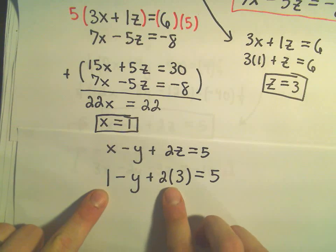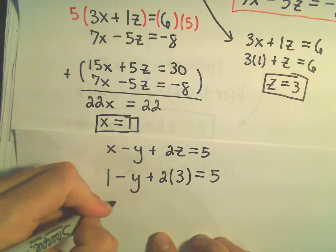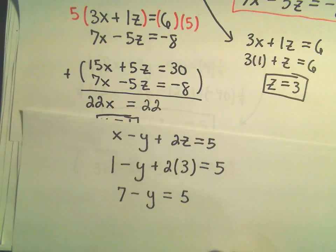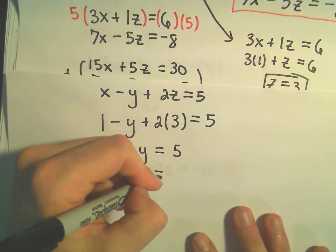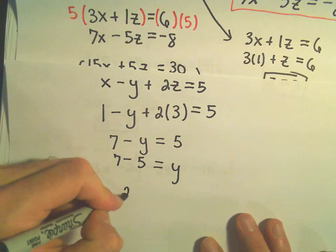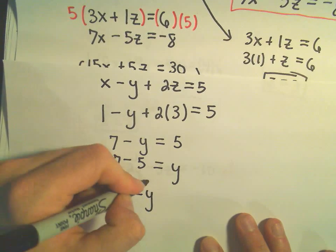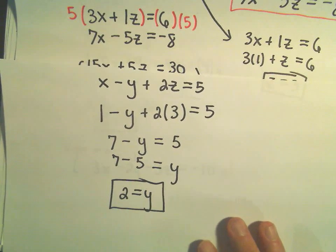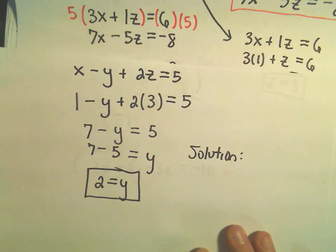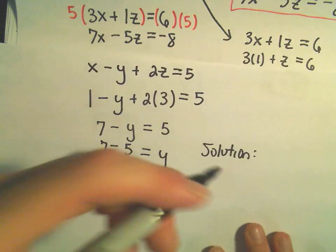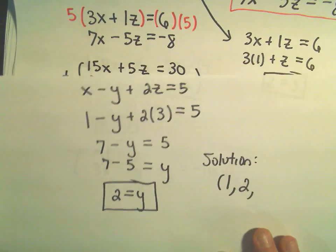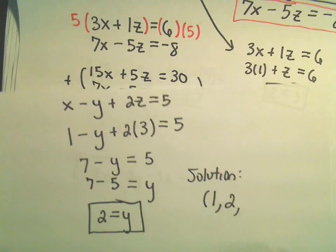Alright, so 2 times 3 is 6. We've got 1 plus 6, which would be 7 on the left, minus y equals 5. We could add the y to both sides and at the same time subtract 5 from both sides. Well, 7 minus 5 would give us 2. So it looks like our y value should be 2. So we finally got our solution to our system of equations. We said x was equal to 1. We figured out that y was equal to 2. And we had also figured out that z was equal to 3.